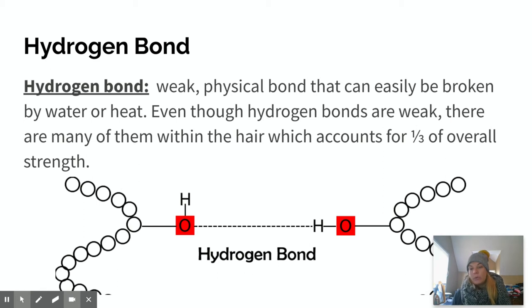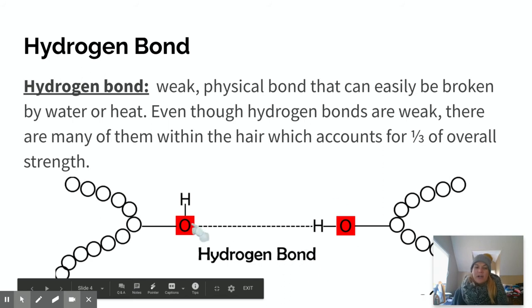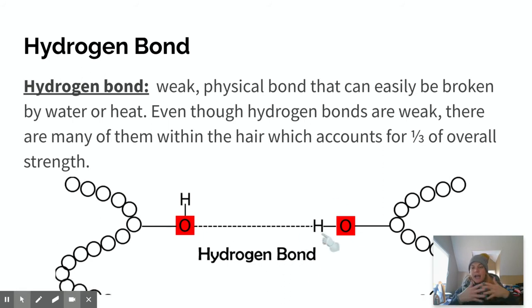I think the most important thing to realize here with a hydrogen bond is that even though it's called a bond, this oxygen and this hydrogen are not actually bonded together. It's more of what we refer to as an interaction. So they're kind of attracted to each other, but they don't in any way touch. And that's what makes them so weak—because they're not actually bonded, they're more having an interaction with each other.